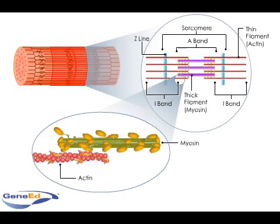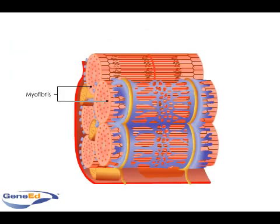A Z-line bisects each I-band, and each of the two bisected halves belongs to a nearby sarcomere. An endoplasmic reticulum, the sarcoplasmic reticulum, consists of interconnected tubules that run longitudinally to surround muscle fiber.